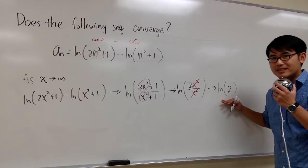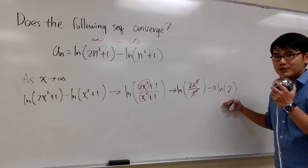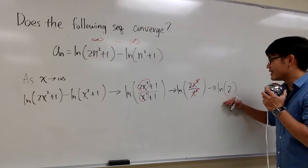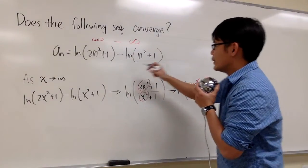This right here will be limit ln(2), it's about 0.693, and it's finite. This right here will be the limit for this sequence. So, we can say,